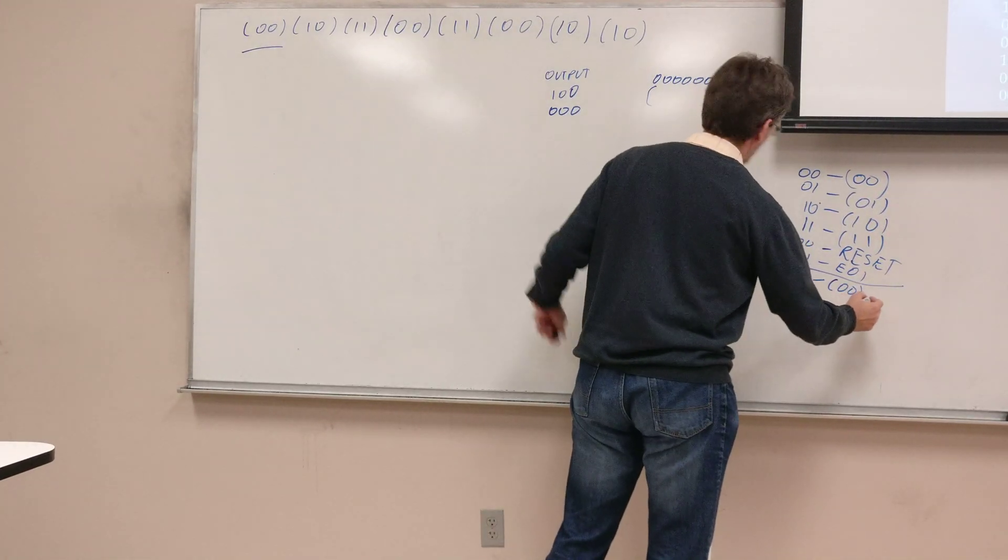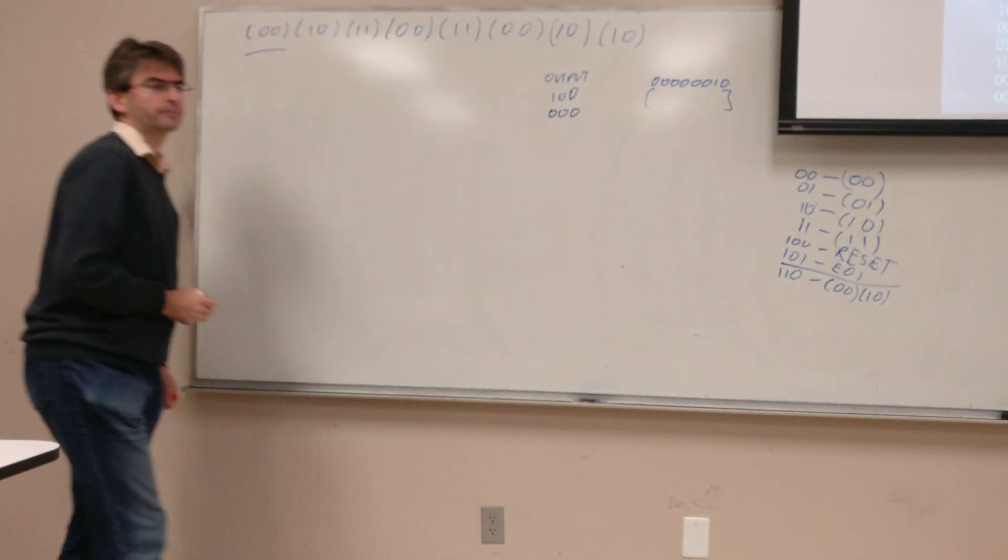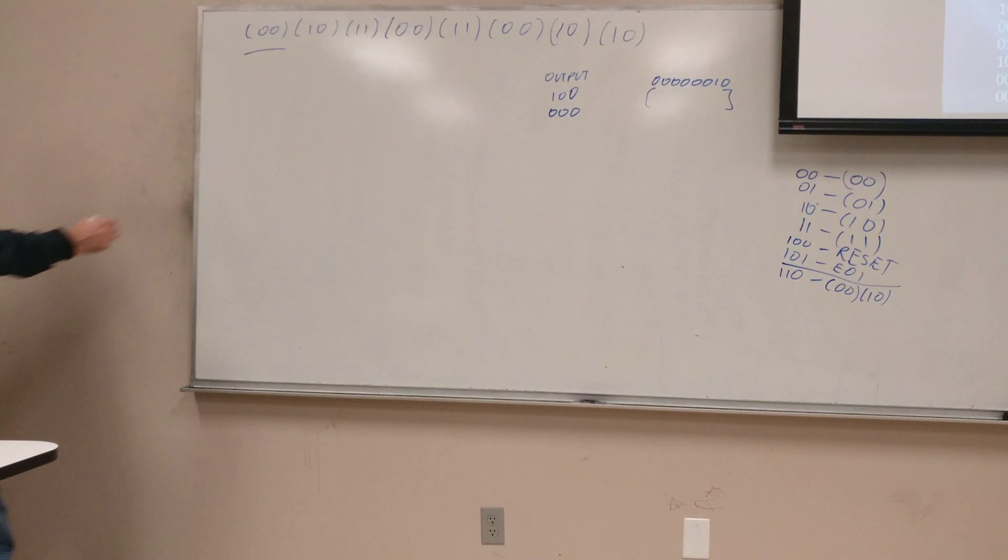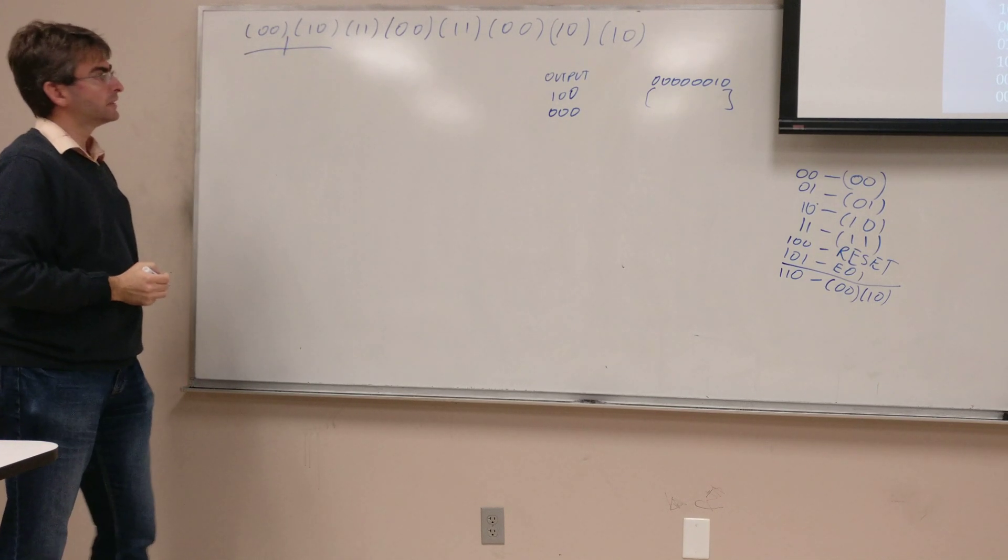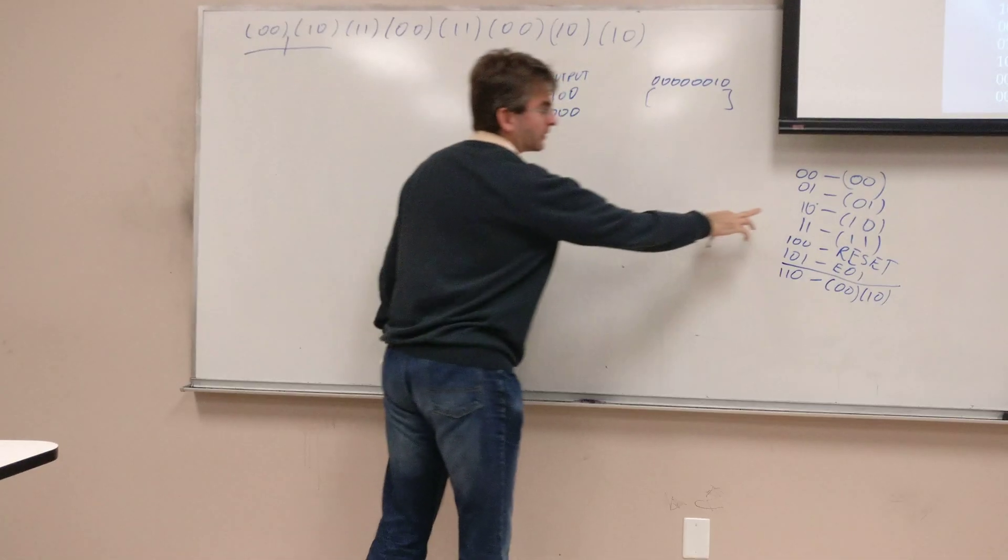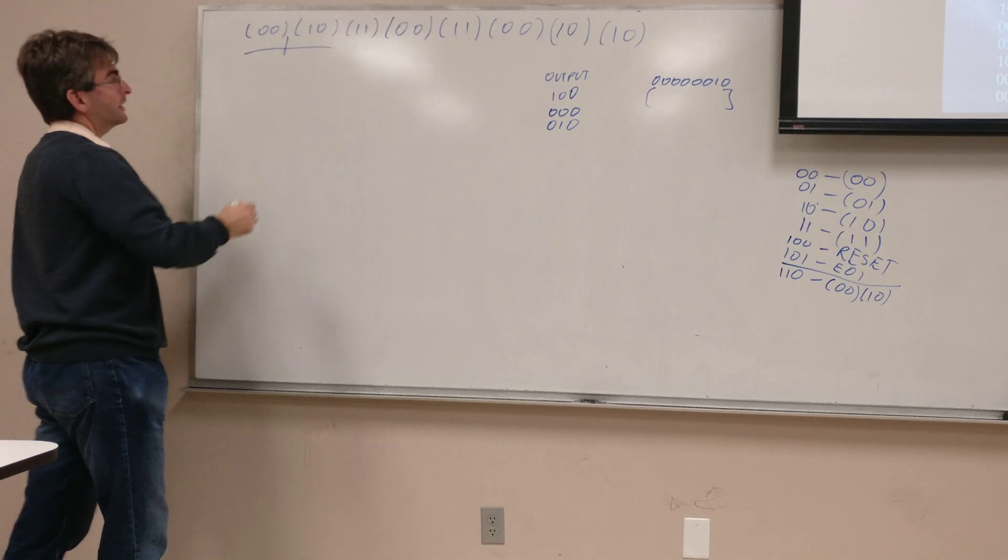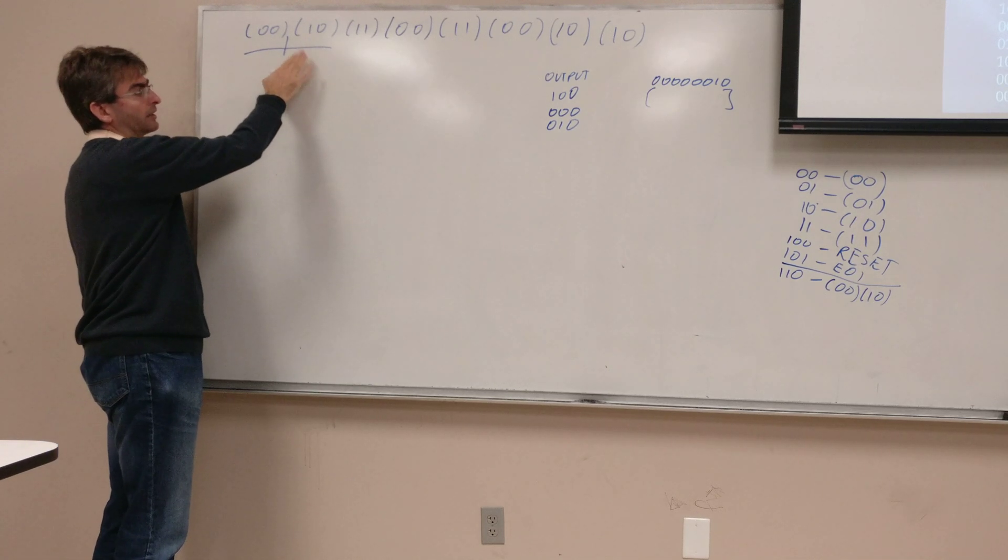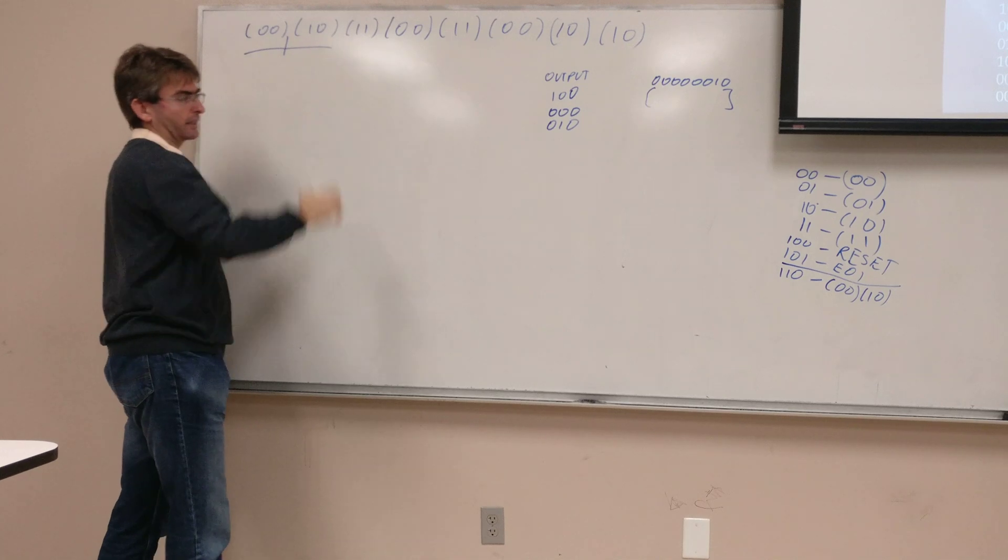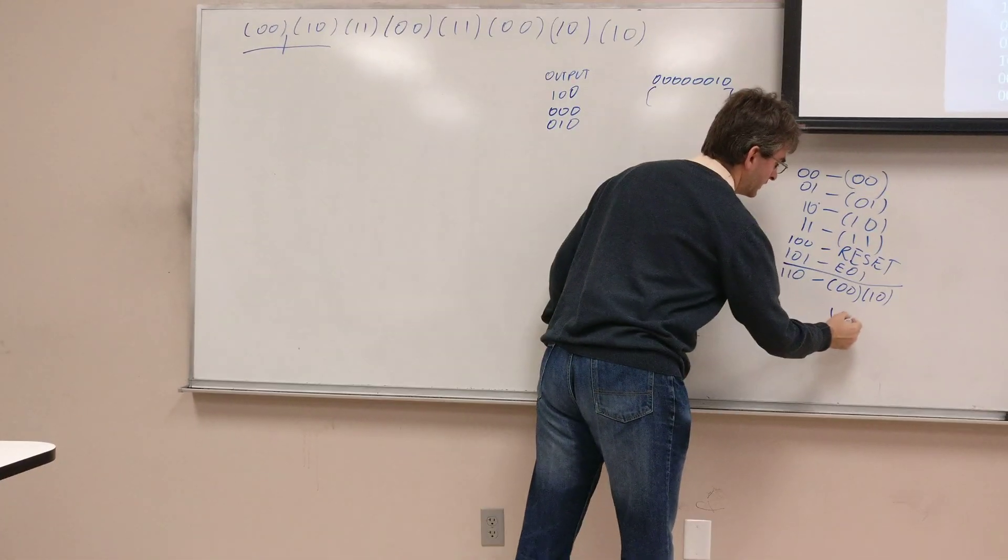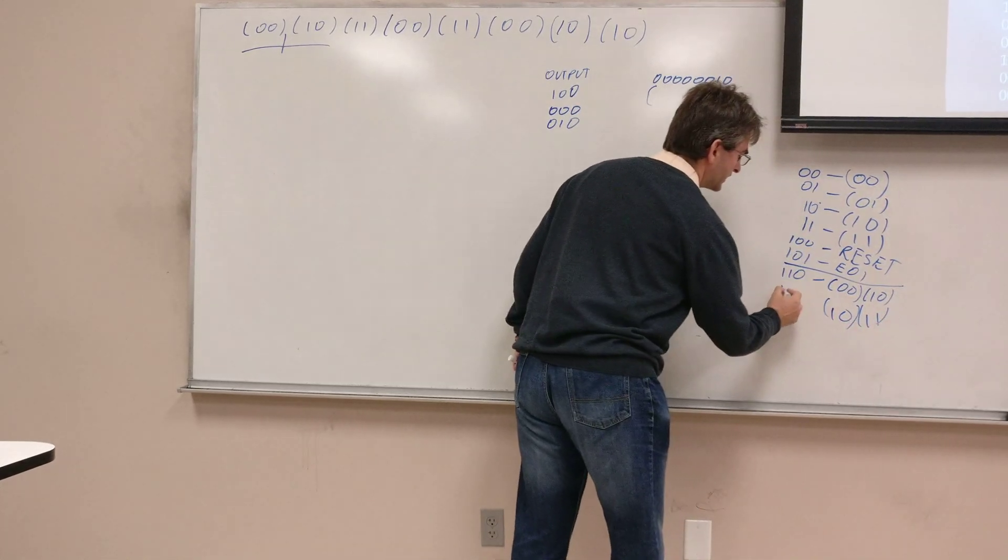Next I'm going to compress 10. 10 has a code 010 and I'm going to create a new dictionary input because I was not able to compress more than that, so I'll create the code for 10 11 and this will be the code 111.